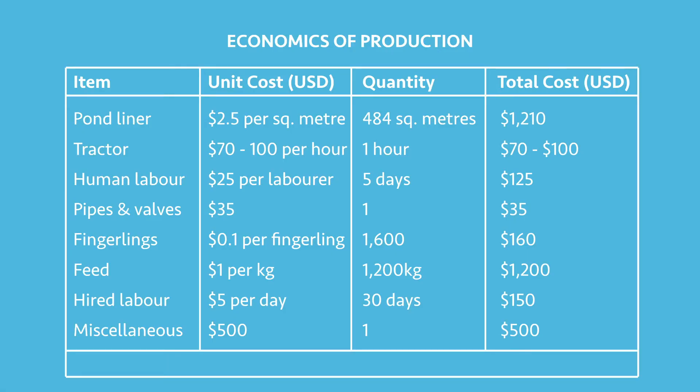When constructing a fish pond, you can use hired labor or manual labor — a tractor or hired human labor. For a 22 by 22 meters fish pond, you require one tractor for one hour, and the average cost of hiring a tractor is between 70 to 100 dollars per hour. For human labor, you require at least five men per day for five days, with one laborer paid an average of five dollars per day, giving a total cost of 125 US dollars for the five days.